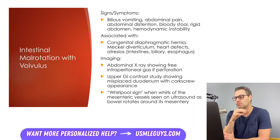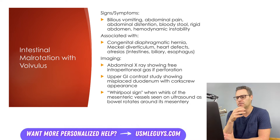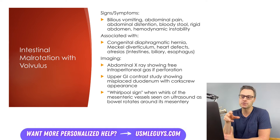Intestinal malrotation is more likely in patients with other congenital anomalies. One to keep an eye out for is diaphragmatic hernia. Other associated abnormalities include Meckel's diverticulum, certain heart defects, and atresias — especially those in the intestines, the biliary tract, or the esophagus. Look out for all of those in the vignette when they're potentially pushing you toward this diagnosis.